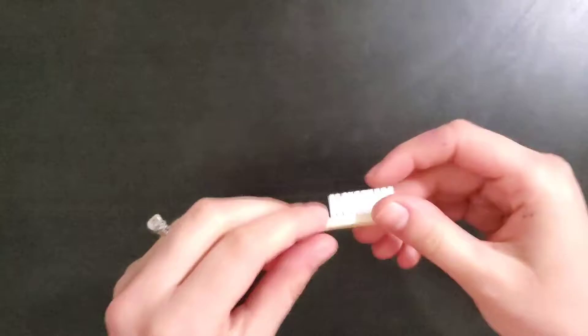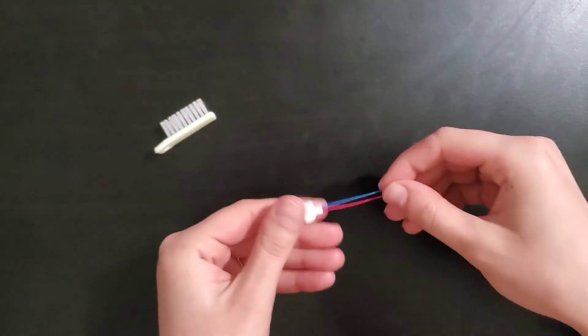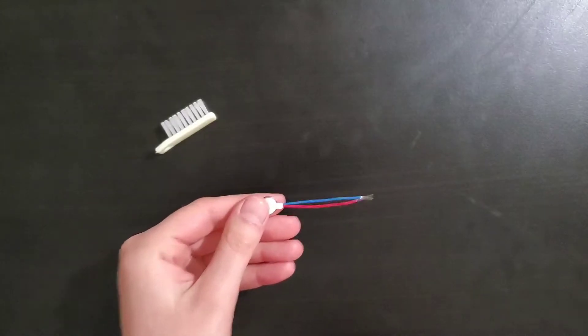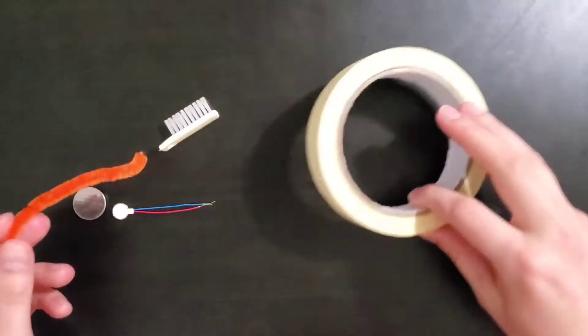So to make a bristle bot what you'll need is a toothbrush head, a motor, coin battery, pipe cleaner, and some tape.